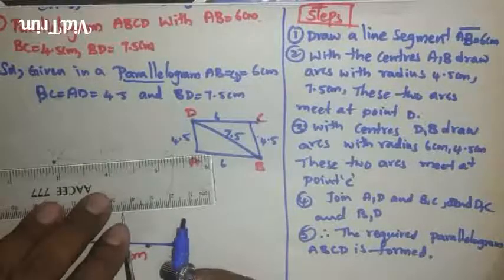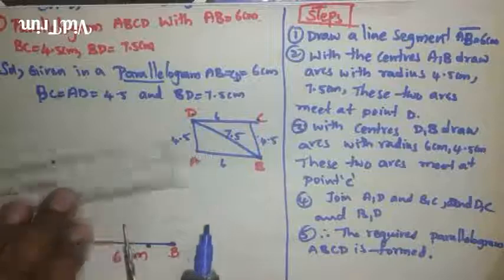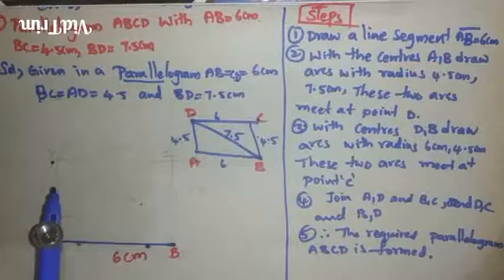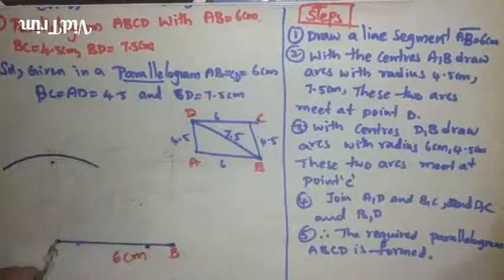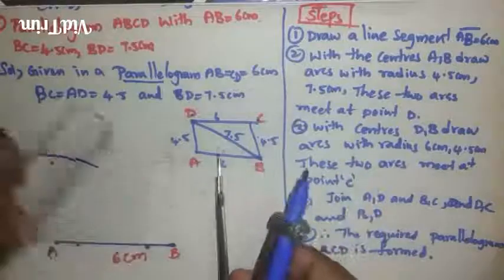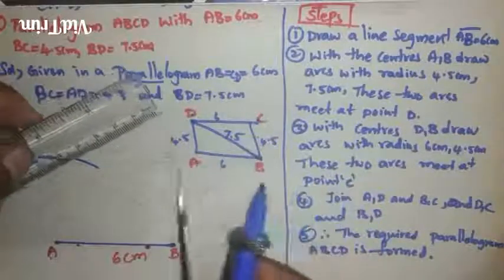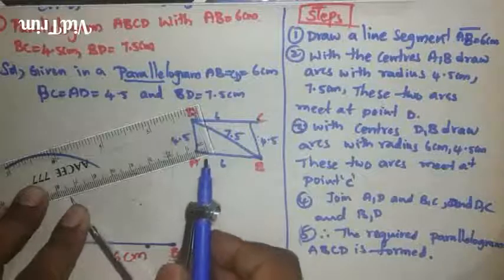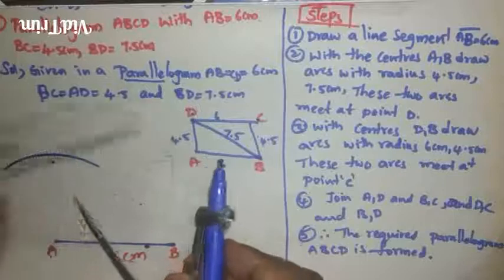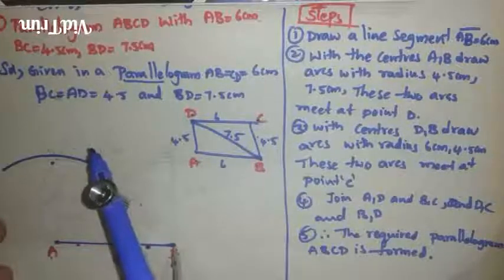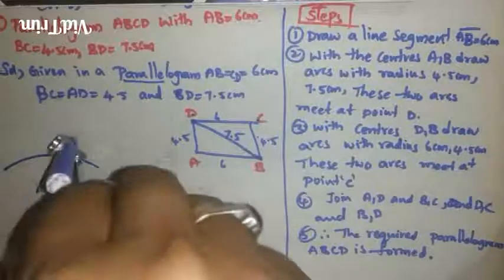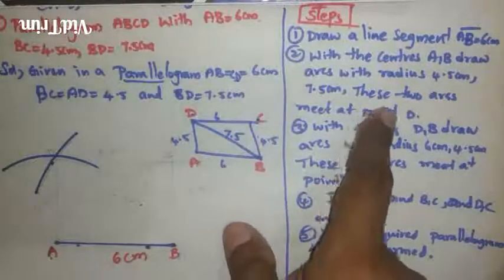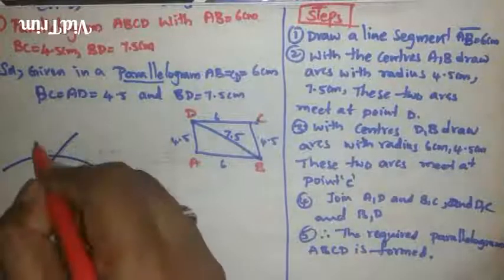From where should we take 4.5? From point A. So we should draw from point A, 4.5. Next, from B to D, 7.5 centimeters. This is 7.5 centimeters from B.